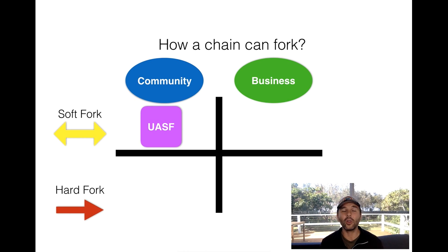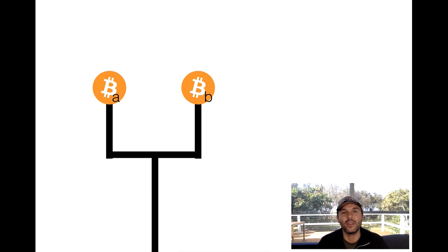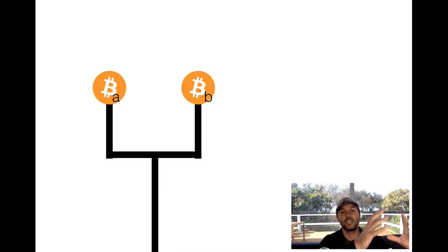All BIP 148 is, is a community activated soft fork. That's basically it. We are having a split on August the 1st — that's the date when this is all going to take place. It's not a voting thing where one side has to get a certain amount of hashing power or a certain percentage of the vote. It's going to happen either way.